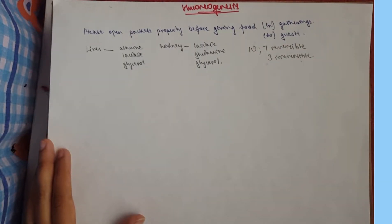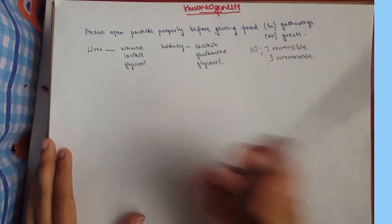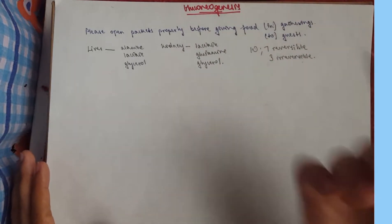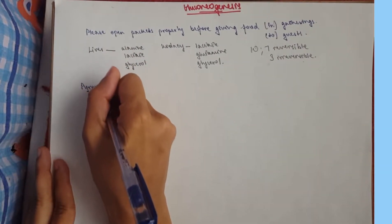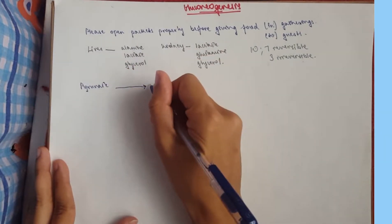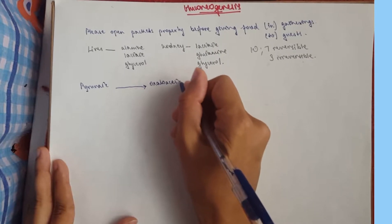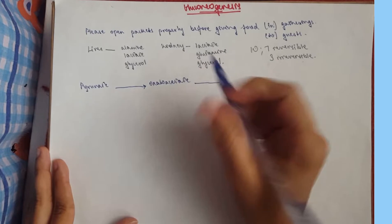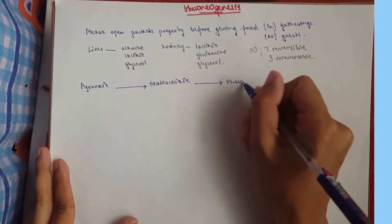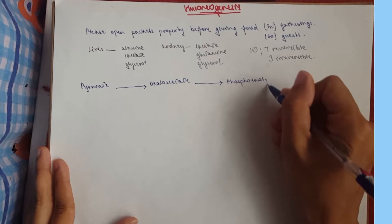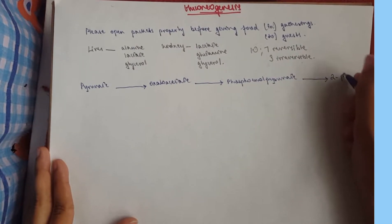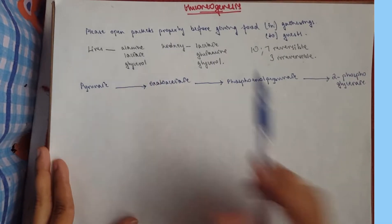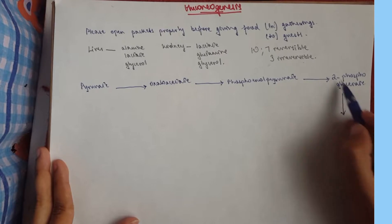Now we'll go through the pathway. I'm writing enzymes in black pen and substrates and products in blue. 'Please' corresponds to pyruvate — our starting substrate. Pyruvate goes to oxaloacetate ('Open'), then to phosphoenolpyruvate or PEP ('Packets'), then to 2-phosphoglycerate ('Properly').